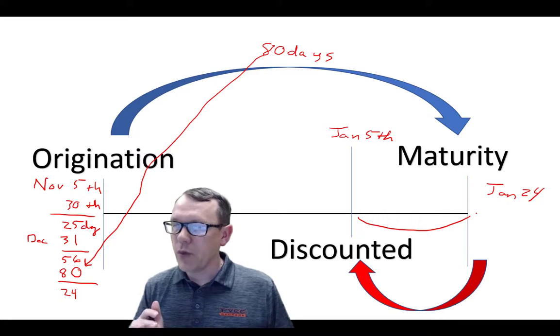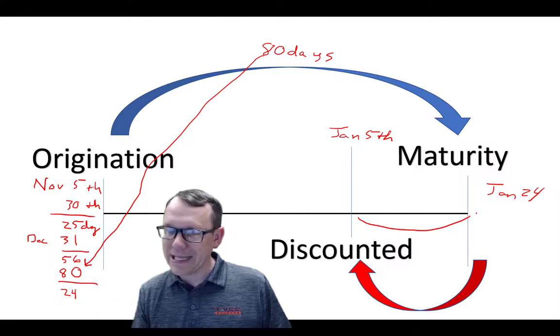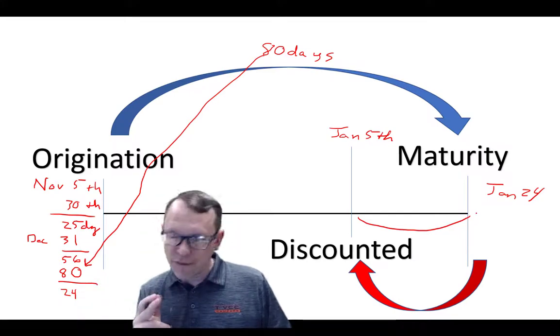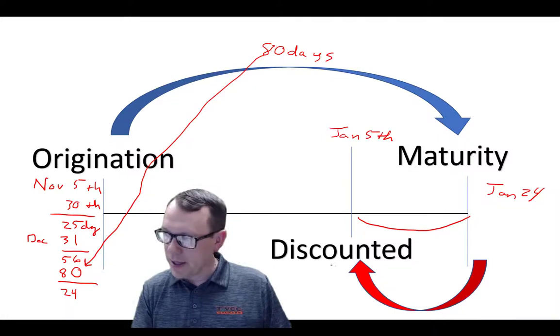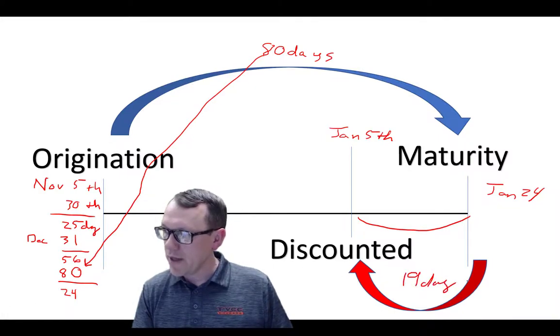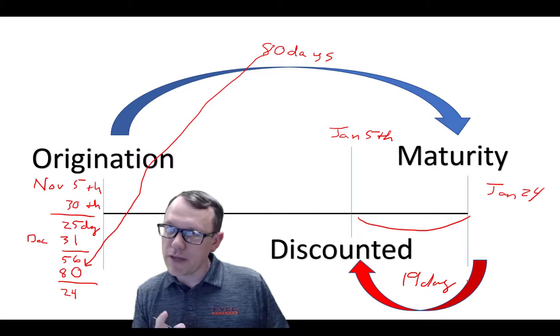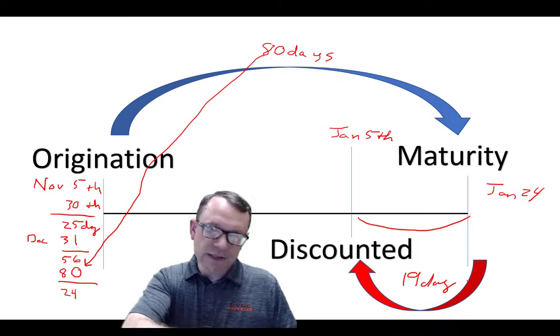What we want to find out, the whole idea of this problem, is to find out how many days that period is, the red arrow going from January 24th back to January 5th. If we find the days in between there, that discount period is actually going to be 19 days. That's 19 days between the 5th and the 24th. That's how long the discount period is, and that's what we're supposed to find out.